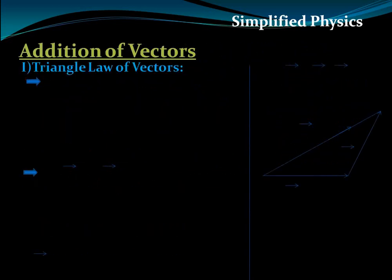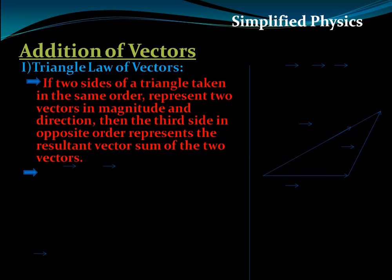Now let's go to the addition of vectors. Two or more vectors can be added. Let's begin with the triangle law of addition of vectors. The statement says: if two vectors acting simultaneously at a point represent two sides of a triangle taken in the same order, then the closing side of the triangle taken in opposite order represents the resultant of the addition of those vectors. This is called the triangle law of addition of vectors.